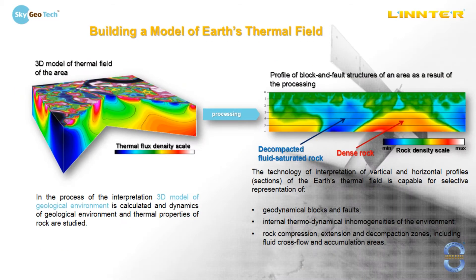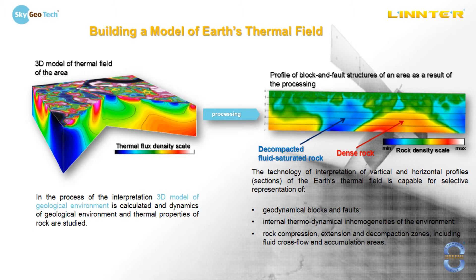After some calculations, as a result, we get a 3D model of thermal field of the area. Red color shows us high temperature, blue color is for low temperature and transitional zones are shown by green color. Then the scientific team makes processing with the use of developed algorithms, and as a result we get a vertical profile of block-and-fold structure, which shows us rock density.